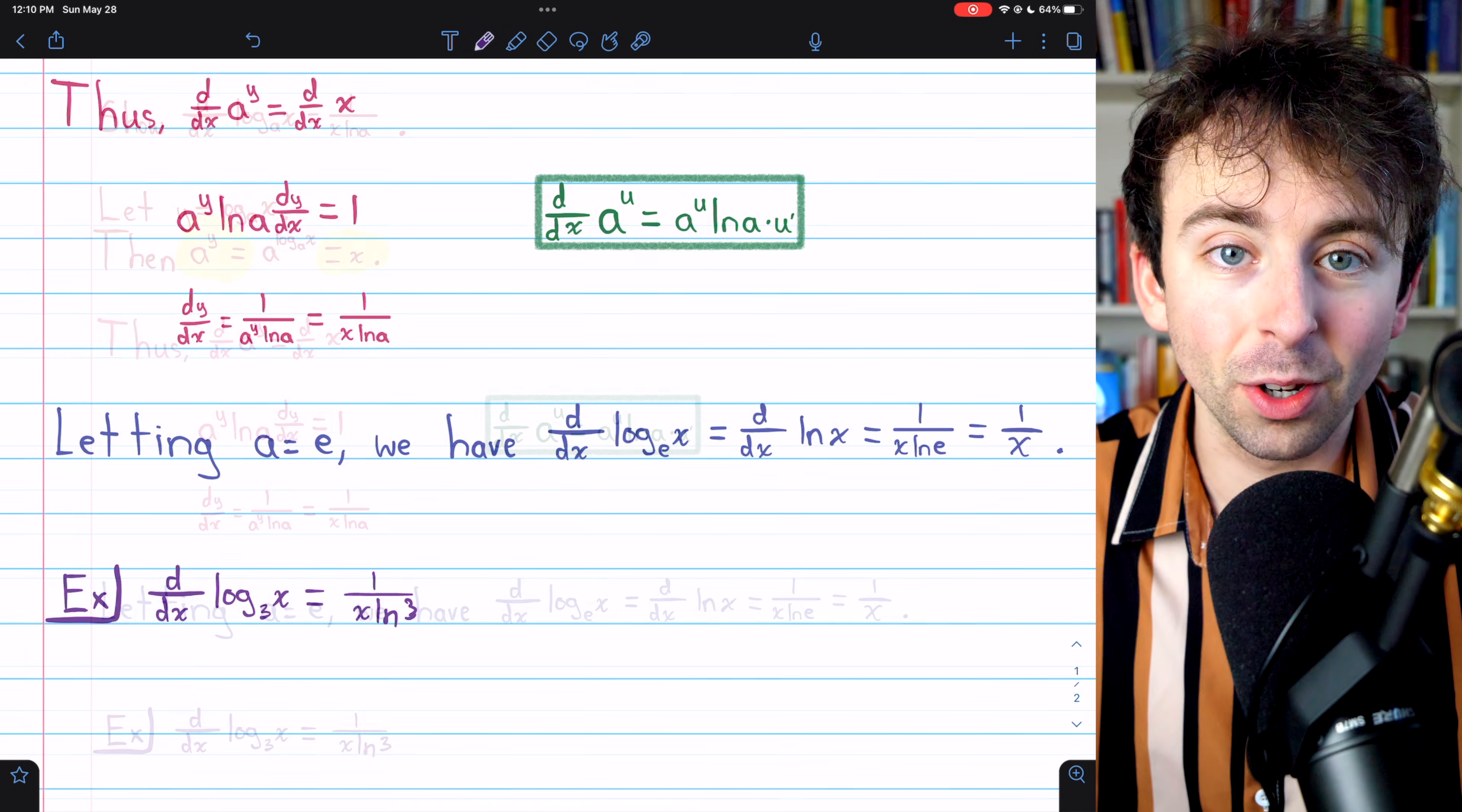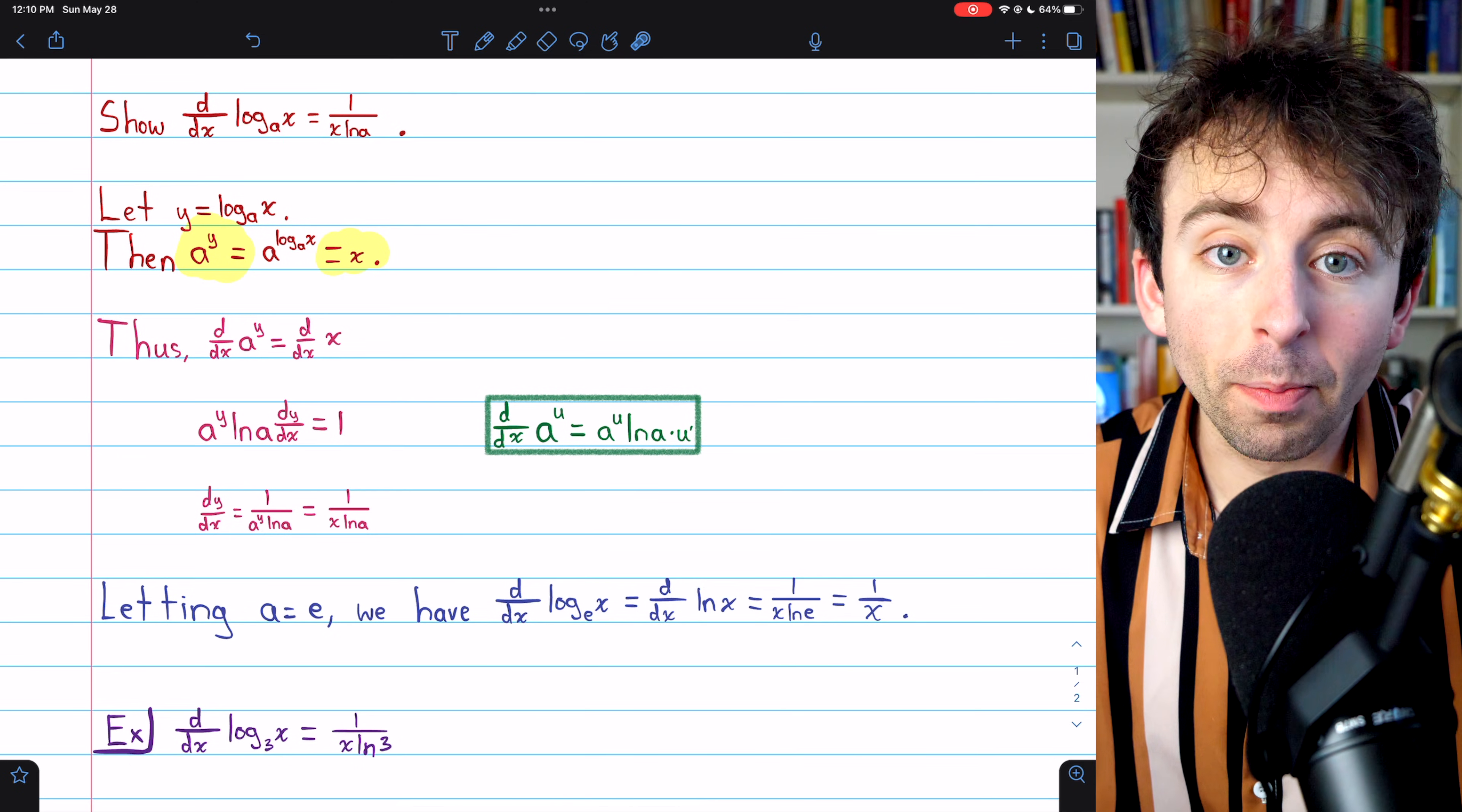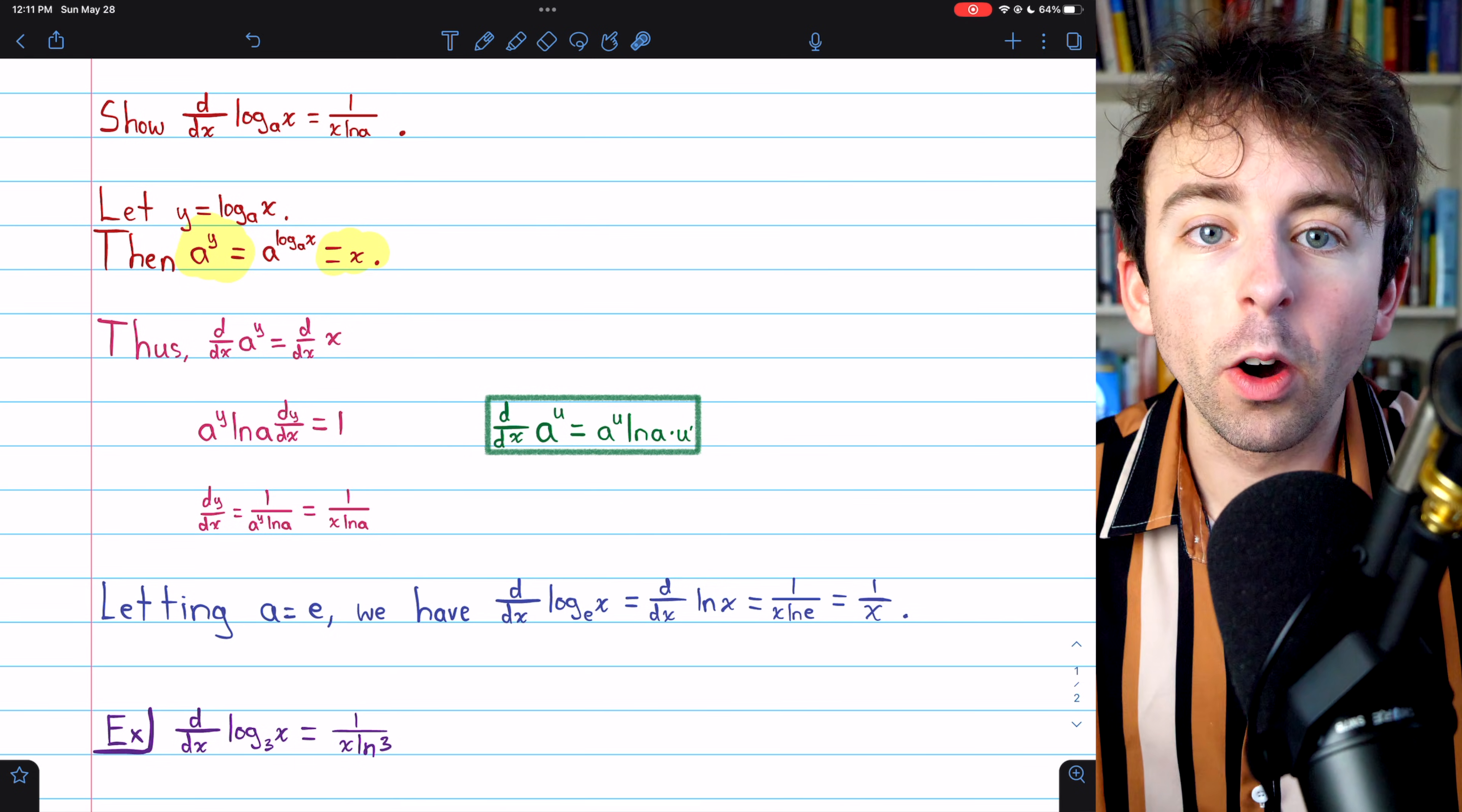So for a positive number a, the derivative of log base a of x is 1 over x ln a. Which also implies that the derivative of the natural log, that's log base e, is equal to 1 over x.